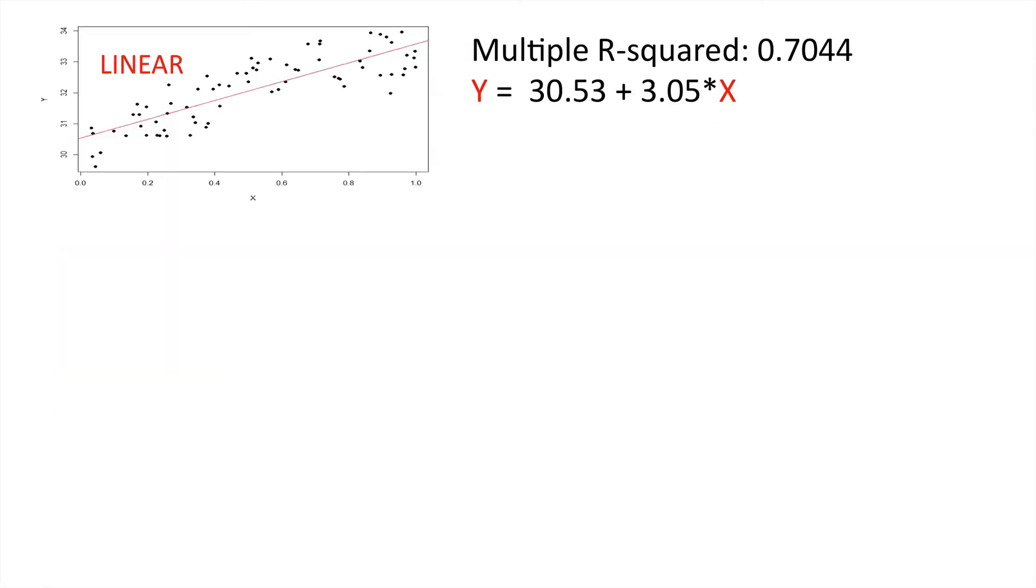Okay. Now, I will show you how to actually fit these various models and draw them in the next RStudio practice. But for now, let us assume that we fitted a linear regression model to our data. You will notice that the multiple R squared is about 70%, and these are the best estimates of the parameters for the intercept and the gradient.